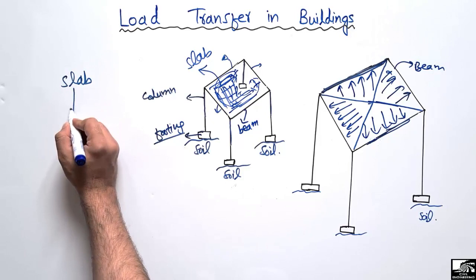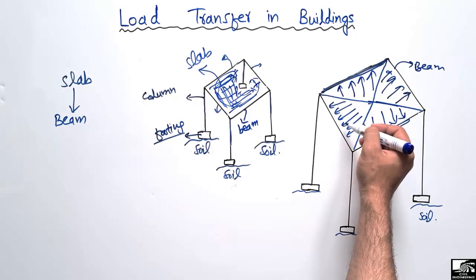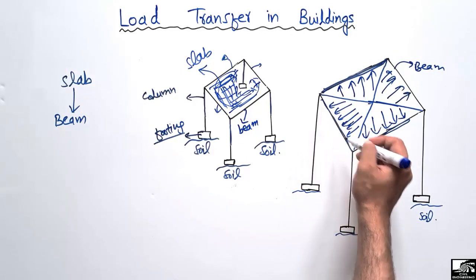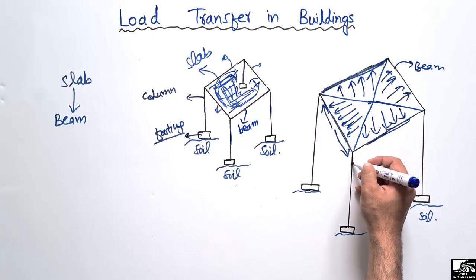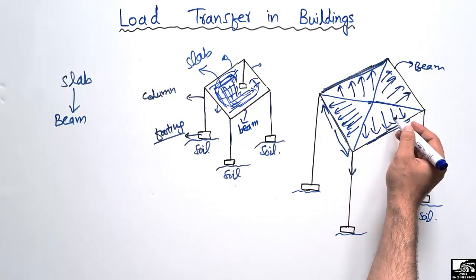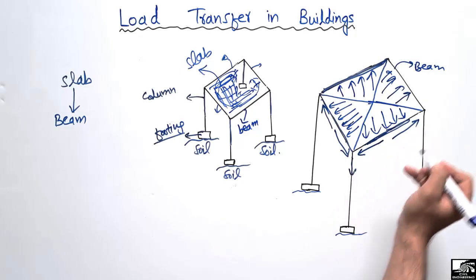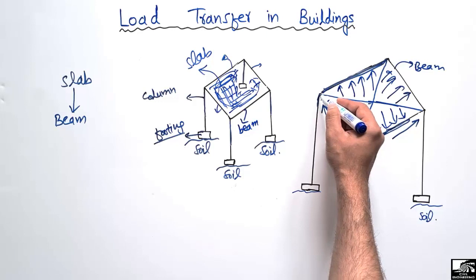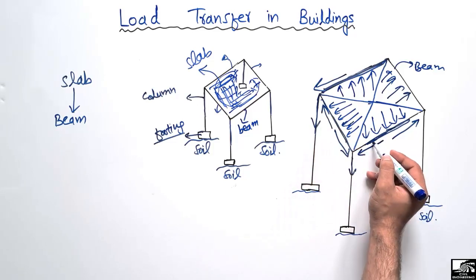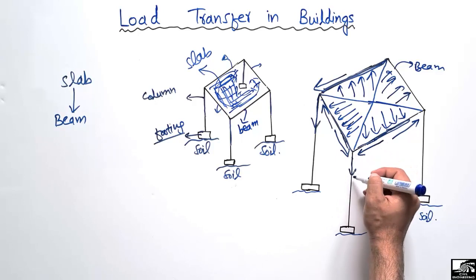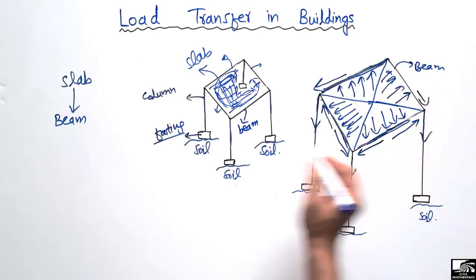After the slab transfers load to the beams, each beam then transfers half the load to one column and half to the other column at each end. For example, the triangular load from the slab coming onto one beam will be transferred — half to the column on this side and half to the column on the other side. Similarly, all beams transfer their loads from the slab to the respective columns.